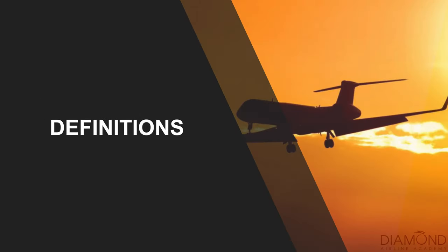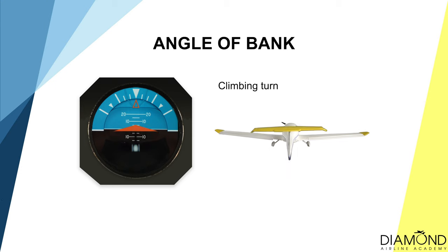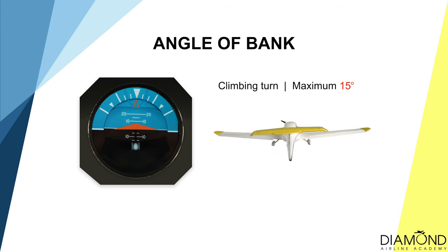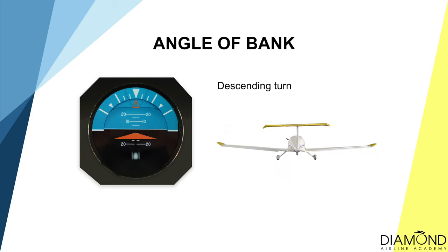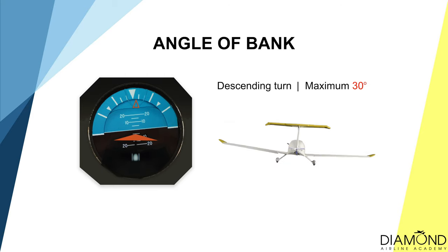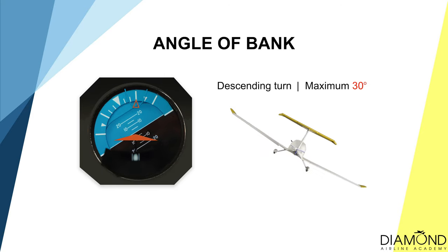The theory behind climbing and descending turns is very similar to a medium level turn. However, there are specific things to look out for. During a climbing turn, the angle of bank is limited to not more than 15 degrees, whereas during a descending turn, the angle of bank can go up to 30 degrees.